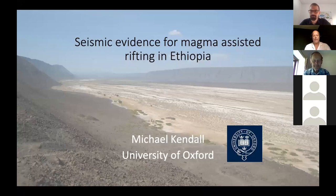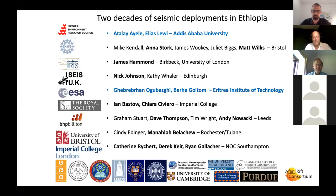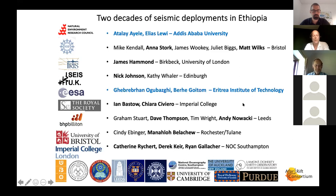I normally would say it's nice to see everyone, but I can't see anybody, so thank you everybody for showing up. What I'm going to talk about is really a review of work that myself and many colleagues have done looking at seismic methods for evidence of magma-assisted rifting in Ethiopia. There are two groups I'd especially like to point out: our colleagues from Addis Ababa University, Atalay and Elias, and colleagues from the Eritrean Institute of Technology, Gabri Bahan and Berhe. I'm going to concentrate on seismic methods, primarily the mantle, although I'll touch a little on crustal effects too.